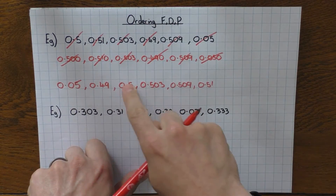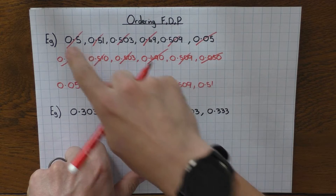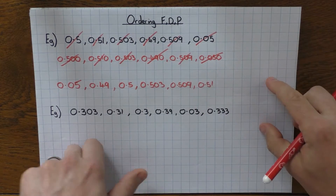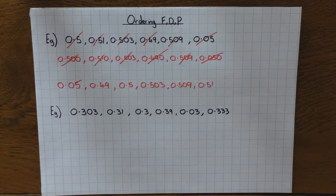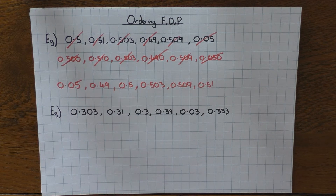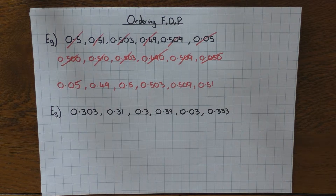Quick count - 1, 2, 3, 4, 5, 6. Happy days, you've got them in the right order. And obviously always double check that you've got them right as well. Okay, so that's the way to do it.